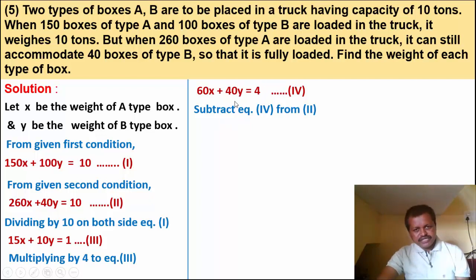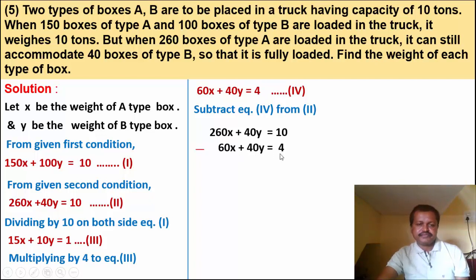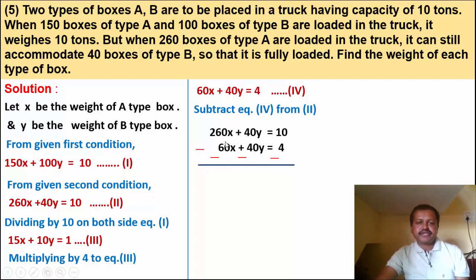Equation 2: 260x plus 40y equals 10. Minus equation 4: 60x plus 40y equals 4. Subtracting: 260x minus 60x gives 200x; 40y minus 40y cancels; 10 minus 4 gives 6. So 200x equals 6.